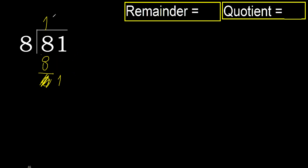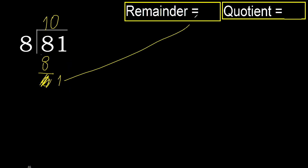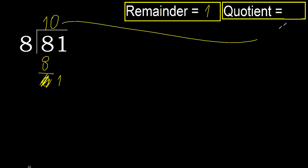Therefore finish it. Here complete — always complete with 0, complete with 0 because here, finish it with this number. Ok, 1, 10.